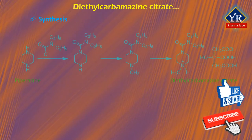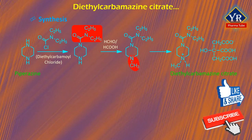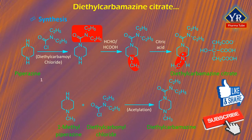Diethylcarbamazine citrate is synthesized by condensing piperazine with diethylcarbamoyl chloride, which is made from diethylamine and carbonyl chloride, and then methylating using formaldehyde and formic acid. The base is converted to the dihydrogen citrate to obtain diethylcarbamazine citrate. It is also synthesized by acylating 1-methylpiperazine with diethylcarbonyl chloride.